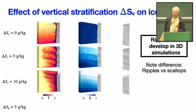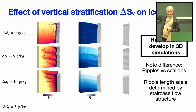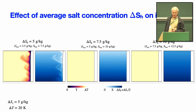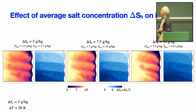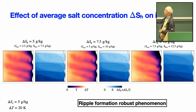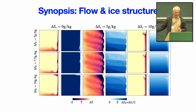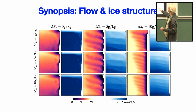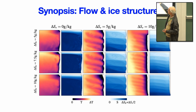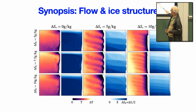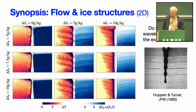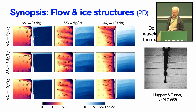The effect of vertical stratification on ice melting is striking. In fresh water, no ripple formation; at 5 grams per kilogram, you get ripples; at 10 grams per kilogram, no ripples. Only for medium vertical stratification do these ripple structures form in the ice. This also holds in 3D — you see the temperature field, salinity field, and developing ripples at the side of the ice block, thanks to layering. The ripples are distinct from the scallops formed in fresh water.